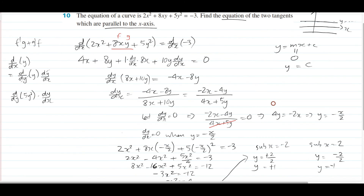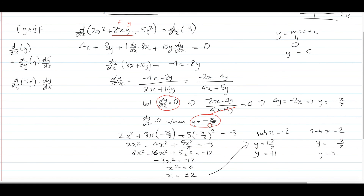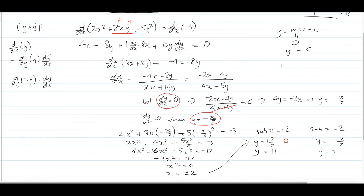The logic behind this is: the gradient is flat when y equals negative x on 2. We don't have a number, so we sub that relationship back into the original equation to find the specific points where this happens — giving x equals plus or minus 2. Then we sub those x values back into y equals negative x on 2 to get the y values, which define the horizontal tangent lines y equals 1 and y equals negative 1. Hopefully you found it useful — if you did, leave a like. Thanks for watching.